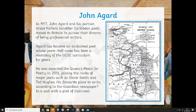Even though his country had a massively varied people and culture, he received essentially a British education because Britain was trying to anglicise the world. In 1977 John Agard and his partner Grace Nichols — another Caribbean poet — moved to Britain to pursue their dreams of being professional writers. Agard has become an acclaimed poet whose poem 'Halfcast' has been a mainstay of the GCSE curriculum for many years. Also look up Grace Nichols' poems — she's also been studied at GCSE.